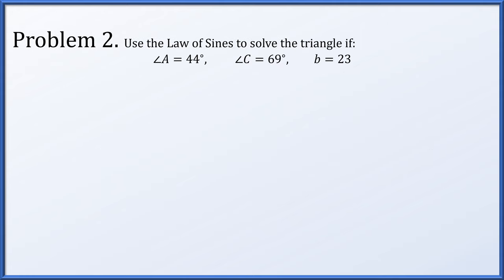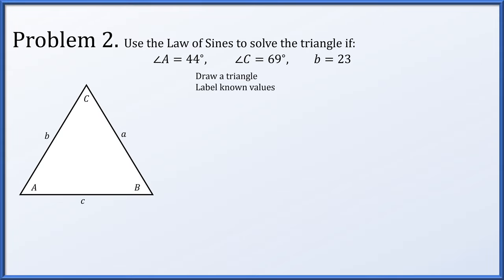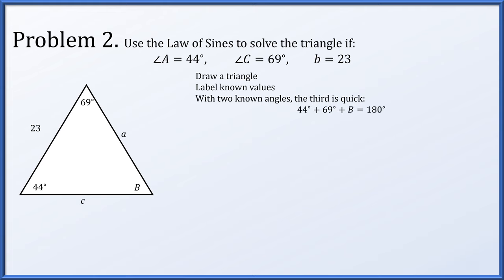Problem two: let's use the law of sines to solve a triangle where angle A is given to be 44 degrees, angle C is 69 degrees, and length b is 23. Let's draw a triangle and label the known values — the two angles and the one side. Now we know two angles in a triangle, which means the third angle is direct to find. The sum of the three angles has to be 180, which gives us the missing angle of 67 degrees.